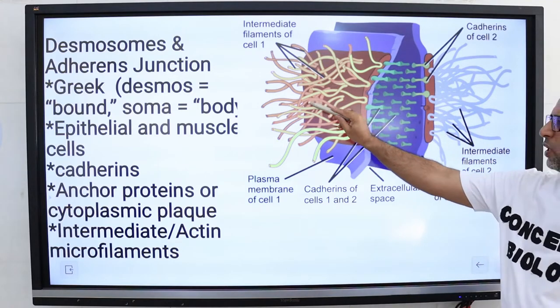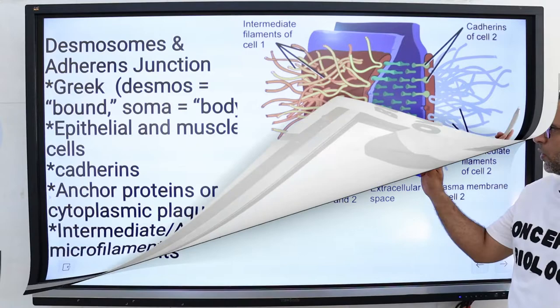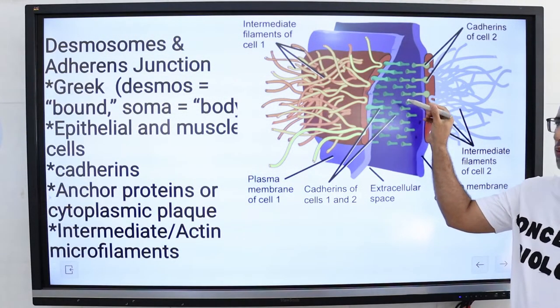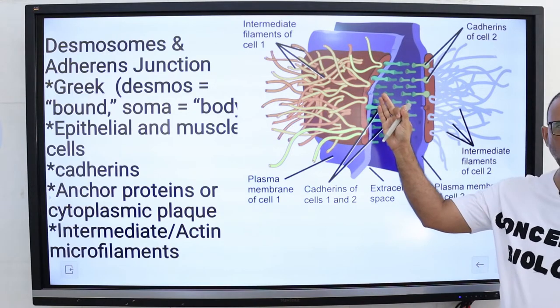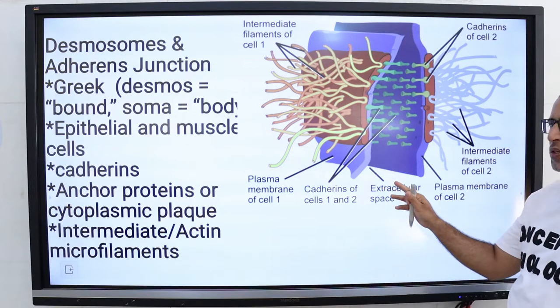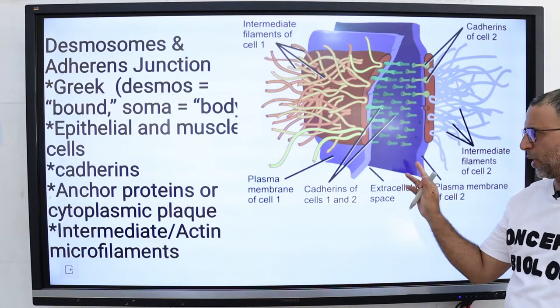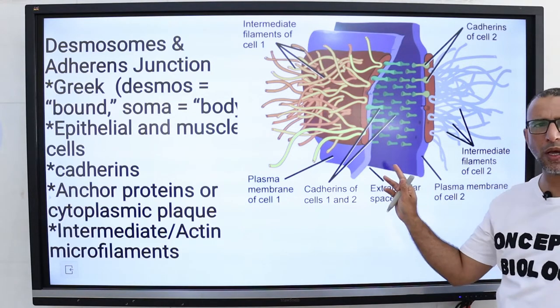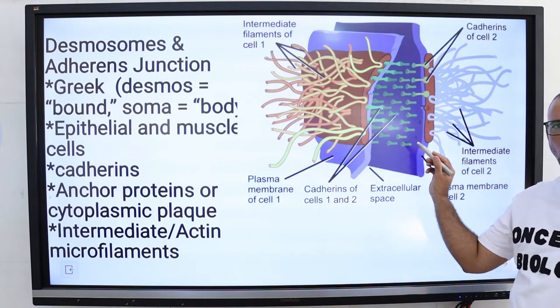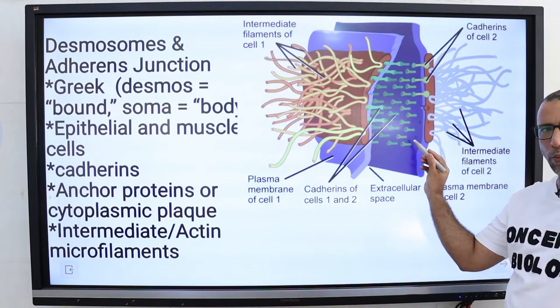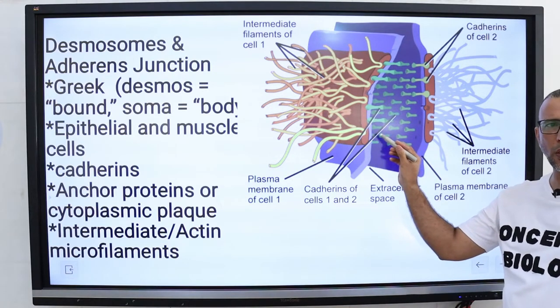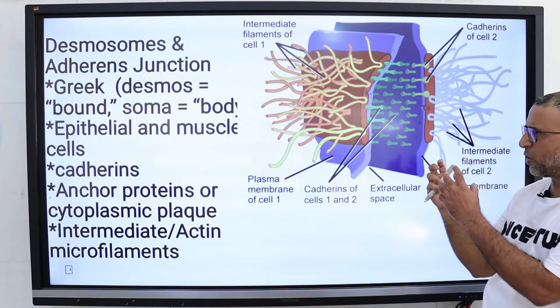Transmembrane adhesion proteins called cadherins are found on the membranes of two cells and the main portions are located in extracellular space present between the plasma membrane of adjacent cells. So extracellular part of one cell's cadherins bind to extracellular part of adjacent cell's cadherins in the space between the two cells.